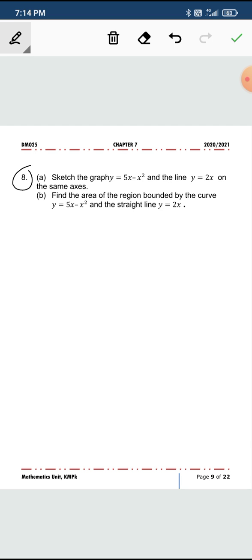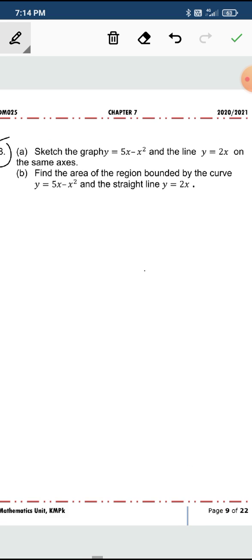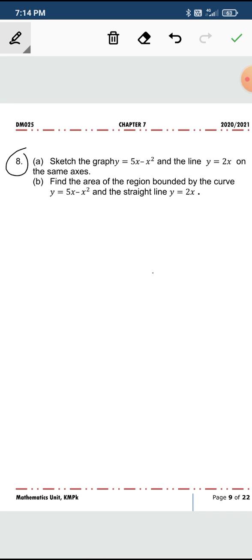If you look at 8a, we are supposed to sketch two functions. The first one is 5x minus x squared. The other one is y equals 2x on the same axis. Before you sketch, get an idea. When you have y equals 5x minus x squared, this is a quadratic curve with the maximum point. And your line, straight line is this. Also, you have to find the x-intercept and you need to factorize.